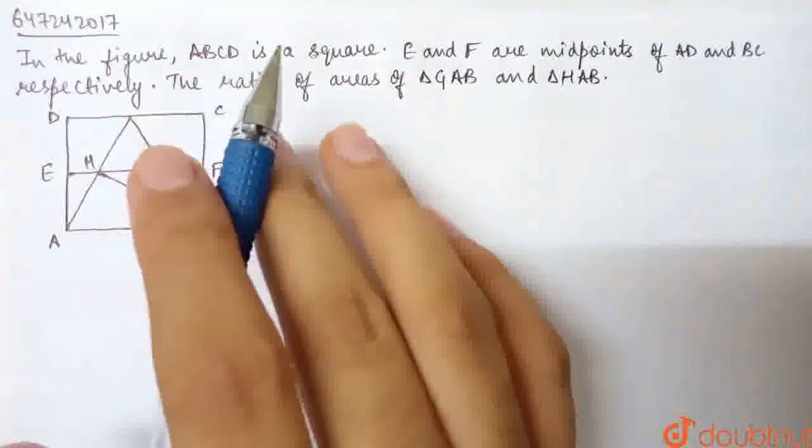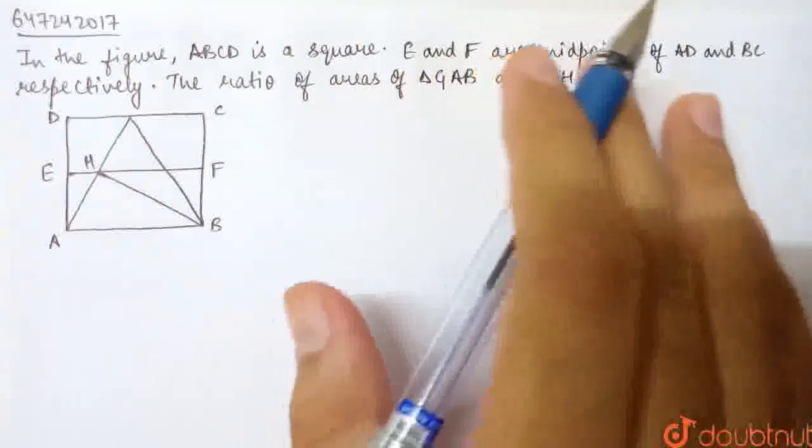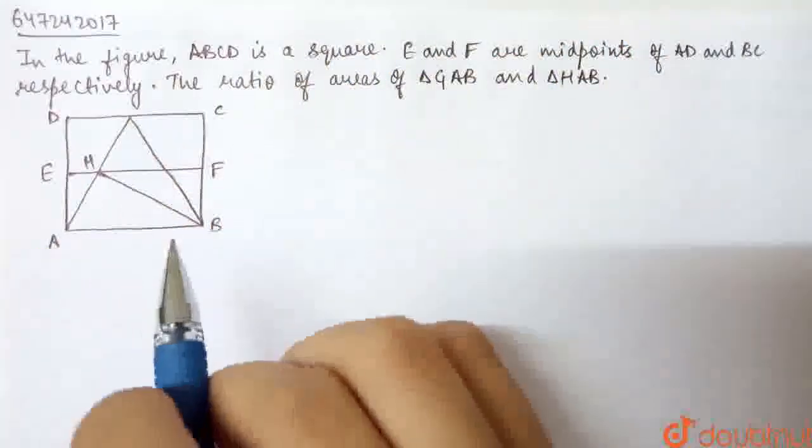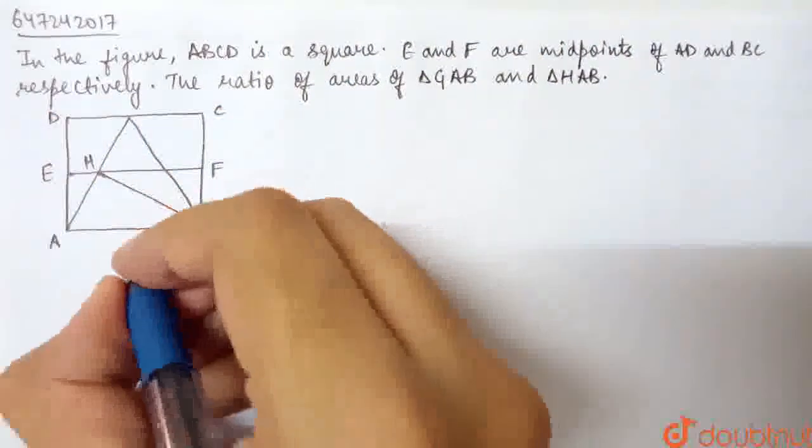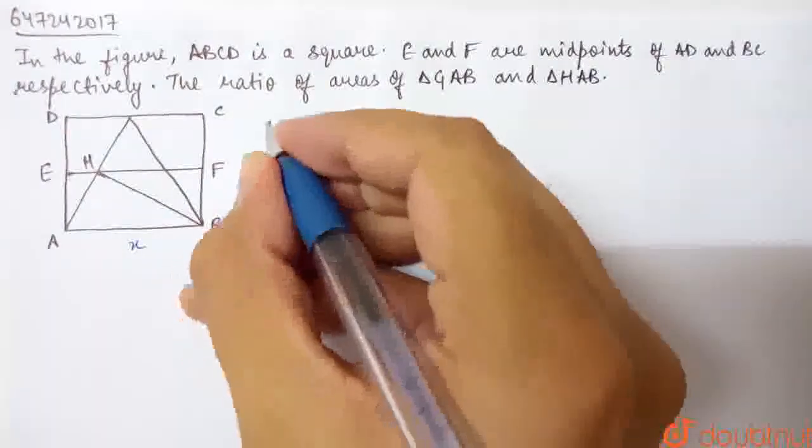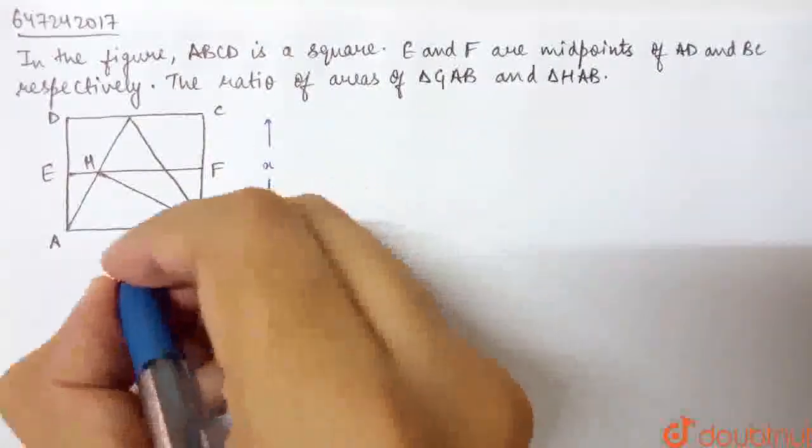This question says: in the given figure, ABCD is a square. E and F are midpoints of AD and BC respectively. Since ABCD is a square, all sides have equal length. Let this side be X, so this is also X.